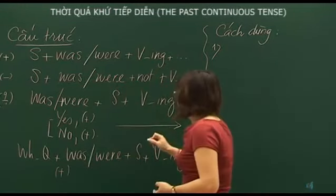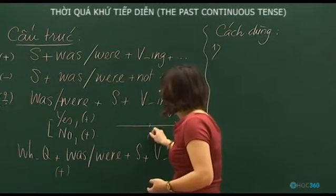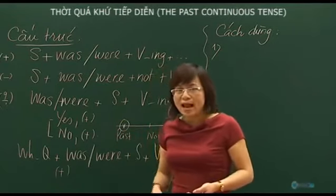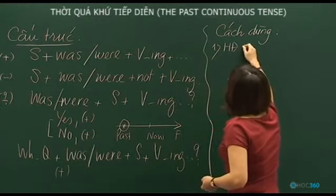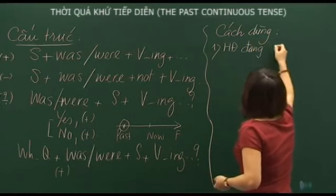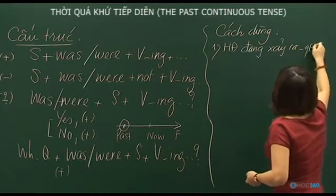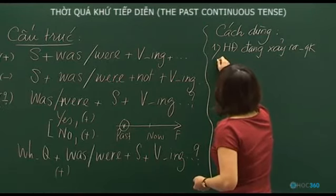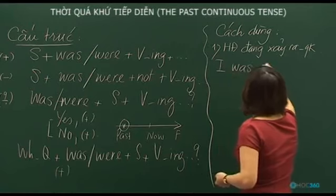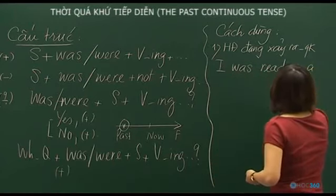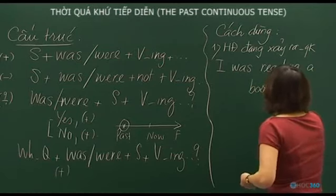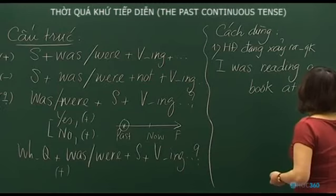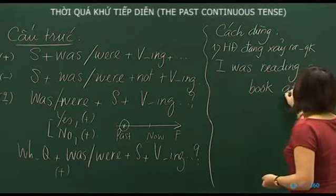On a timeline, there is a specific past point and an action happening at that point. For example, if two hours ago it was 8am: 'I was reading a book at 8am.' Right now it is around 10 o'clock.